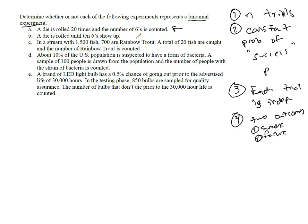A die is rolled until 10 sixes show up. Well, that's a problem because we don't know how many trials that is. You might say 10, but that's not the number of rolls. We don't know how many rolls it's going to require in order to see 10 sixes. So this is not a binomial experiment.